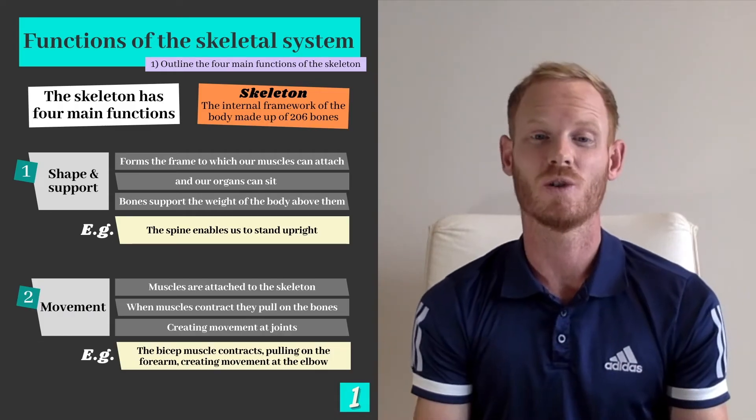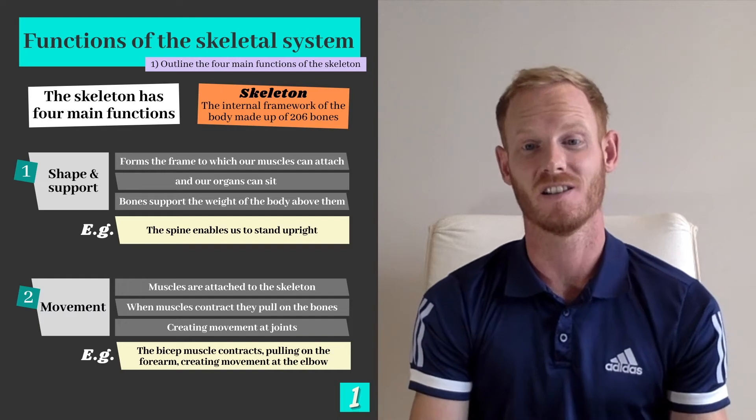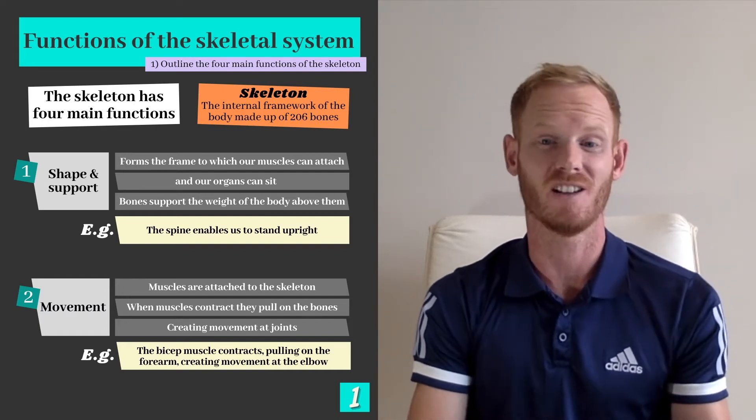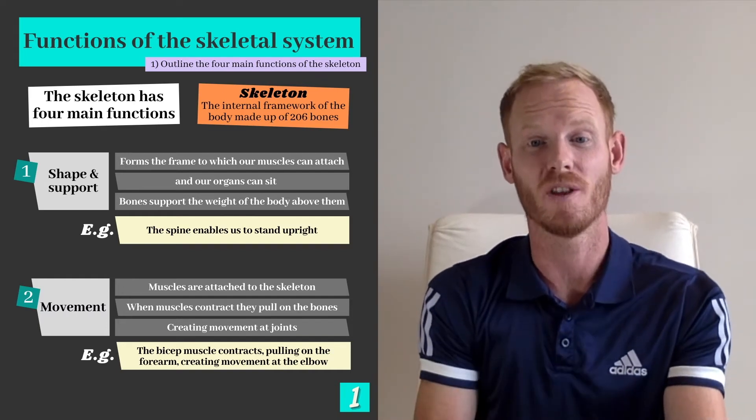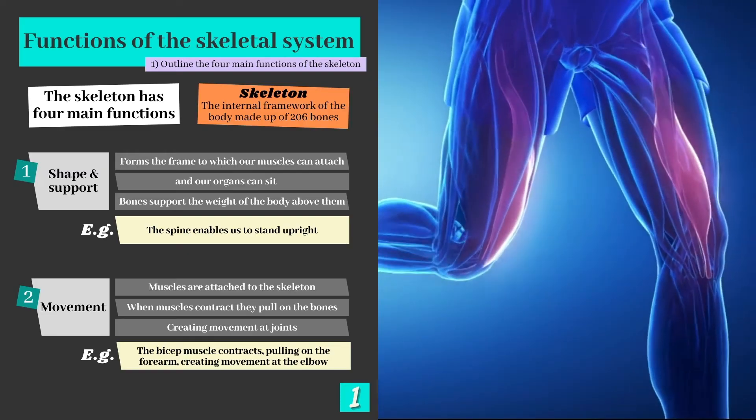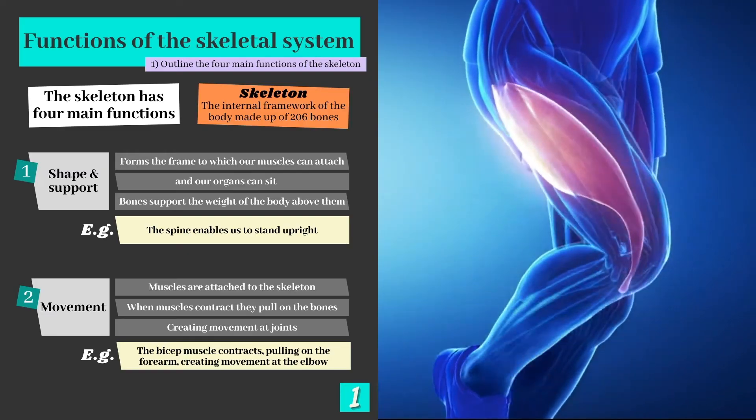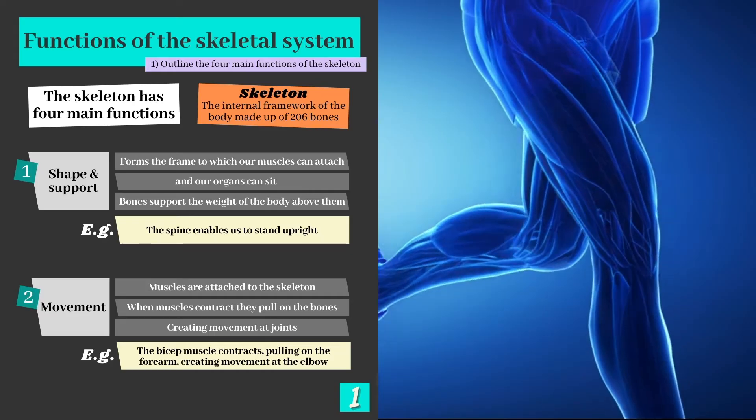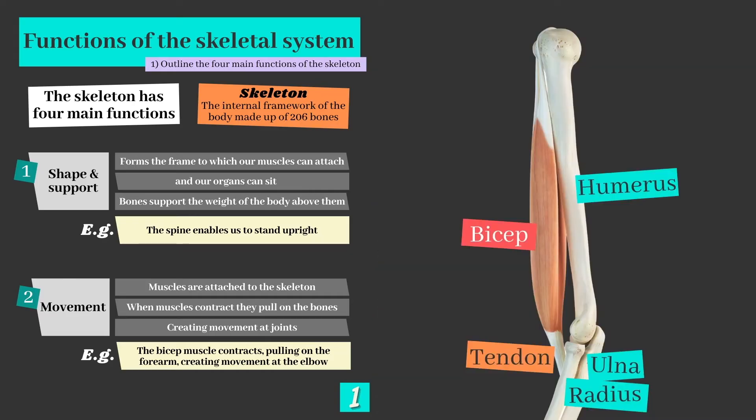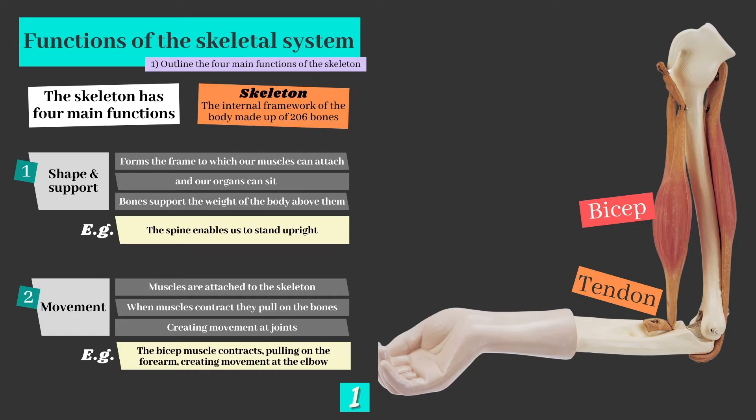The skeleton also enables us to move. Muscles are attached to the skeleton by tendons and when they contract, they actually pull on the bones, creating movement at the joints. So they essentially use the bones and the joints as levers. An example of this is where the bicep muscle contracts, pulling on the forearm and creating movement at the elbow when performing something such as a bicep curl.